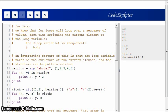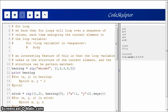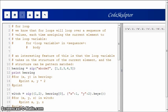An interesting feature of this is that the loop variable takes on the structure of the current element in the loop, and the structure can be pattern-matched. Here is an example. We have herring, which is going to be a list of tuples. Herring is just a list of tuples, and it was created using this zip function, and you can look that up in the docs.